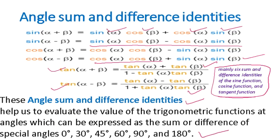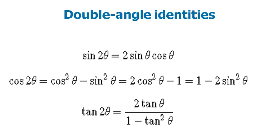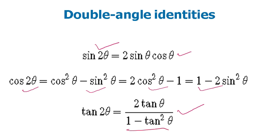Next: double angle identities. sin(2θ) = 2 sin θ cos θ. cos(2θ) = cos²θ − sin²θ = 2cos²θ − 1 = 1 − 2sin²θ. tan(2θ) = 2tan θ / (1 − tan²θ).